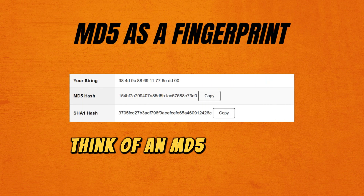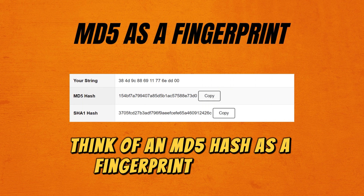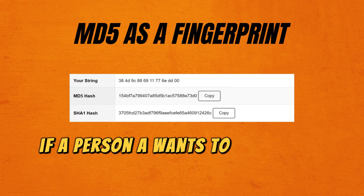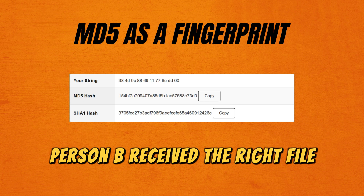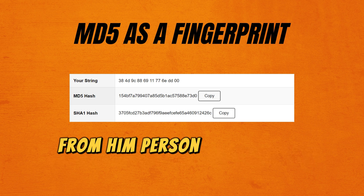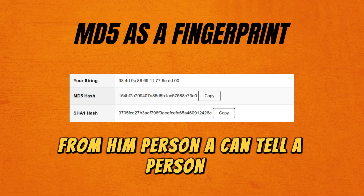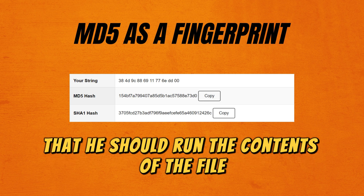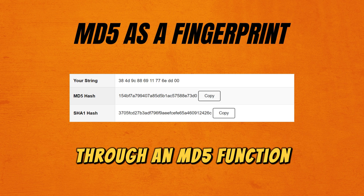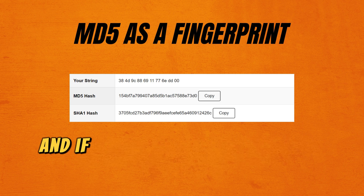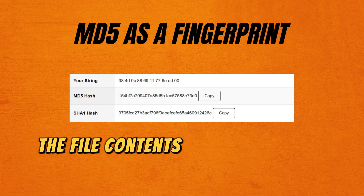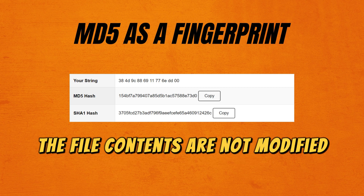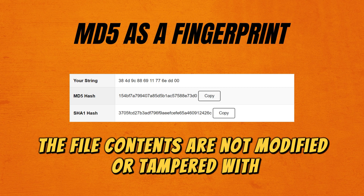Think of an MD5 hash as a fingerprint of sorts. If person A wants to make sure person B received the right file, person A can tell person B to run the contents of the file through an MD5 function, and if the result matches the hash given by person A, the file contents have not been modified or tampered with.